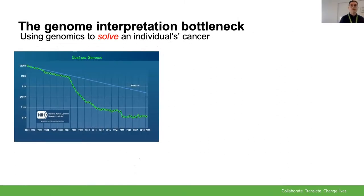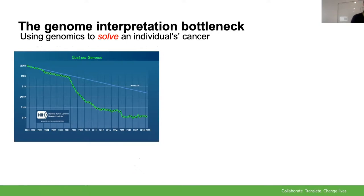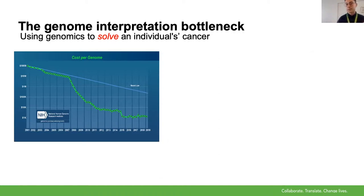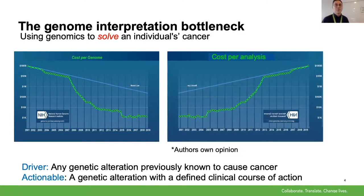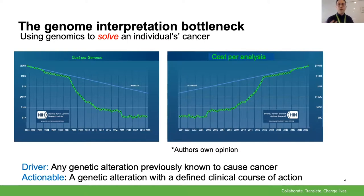Now, it wouldn't be a bioinformatics talk if we didn't have a look at this wonderful slide. We're creating all the data that's available to us as bioinformaticians, and it's cheaper and cheaper to sequence. However, the cost per analysis could get out of control if we don't look at efficient ways to really analyze all the data that we are generating.